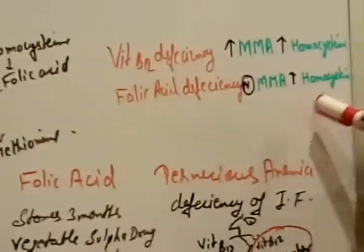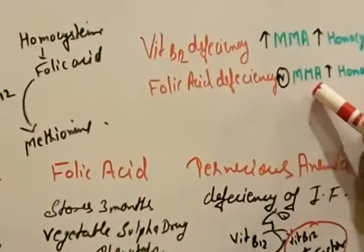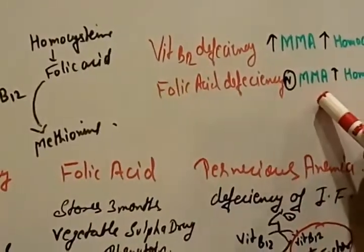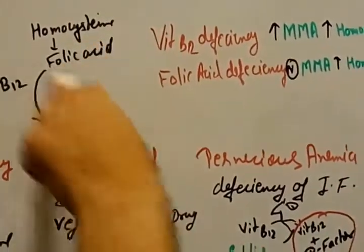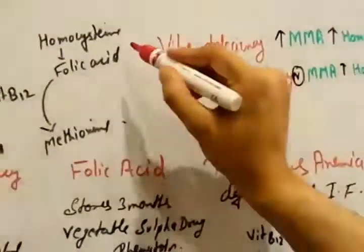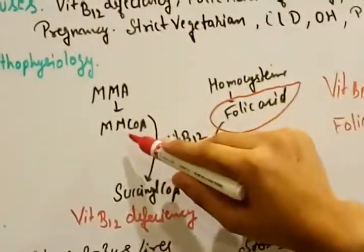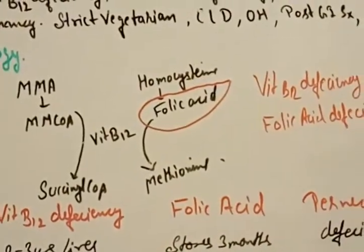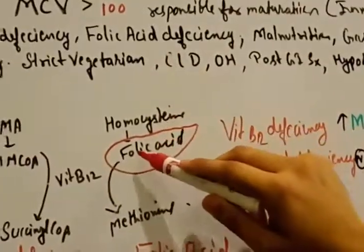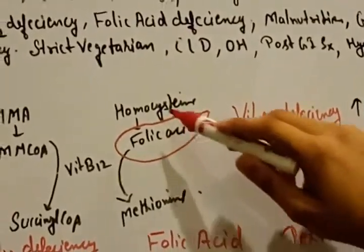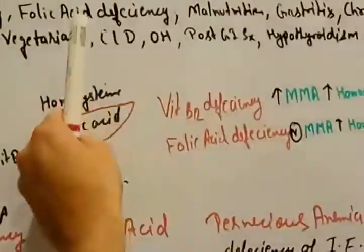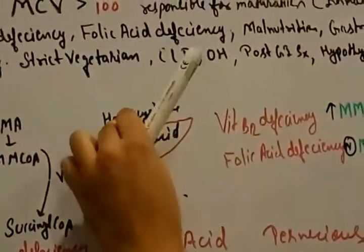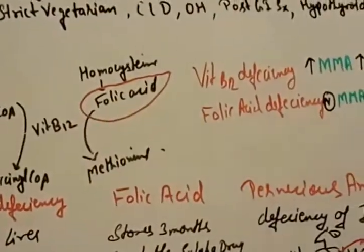But what was going to happen in folic acid deficiency? The methylmalonic acid level going to be normal. Why this is normal? Because here the deficiency of only folic acid. In folic acid deficiency, only folic acid deficiency. So methylmalonic acid converts into methylmalonyl coenzyme, then vitamin B12 and then succinyl coenzyme. And what is going to happen in homocysteine and folic acid? If folic acid no folic acid, then what was going to happen? Homocysteine level going to increase in folic acid deficiency because folic acid not going to be sufficient. So homocysteine increases, increases not going in the pathway.